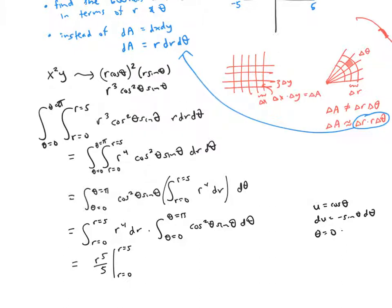So when theta is zero, u is going to be one and when theta is pi, u is going to be negative one. So I'll rewrite the integral. And I'll integrate to get negative u cubed over three evaluated between negative one and one times the rest of my problem.